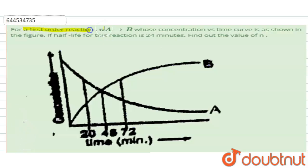Hello everyone, here the question is: for a first order reaction, nA gives product B, whose concentration versus time curve is as shown in the figure. If half-life for this reaction is 24 minutes, then find out the value of n. We have to find out this value of n.